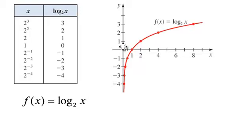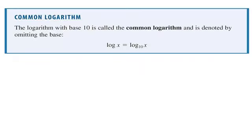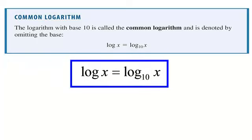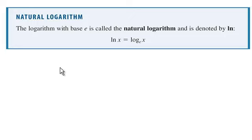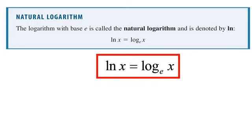A few more definitions. A logarithm with base 10 is called a common logarithm — sometimes the base is omitted. So if you see log of x, it really means log base 10 of x. If you have a logarithm with base e, that is called a natural logarithm, denoted ln. You'll work more with e in calculus, but for now: ln of x means log base e of x.